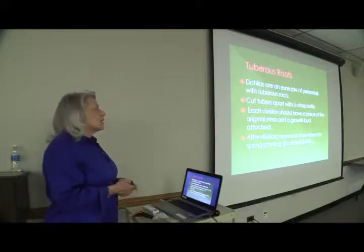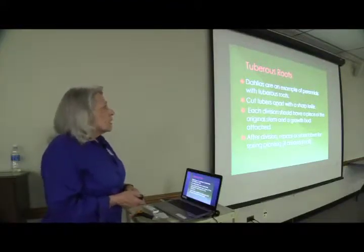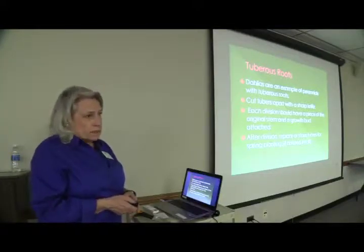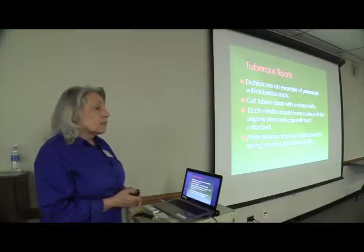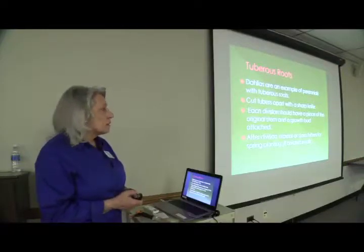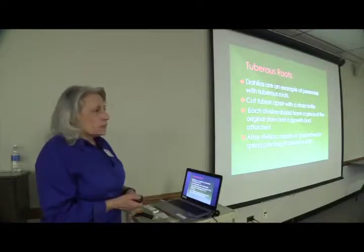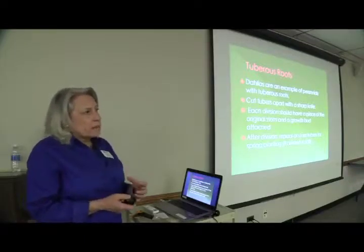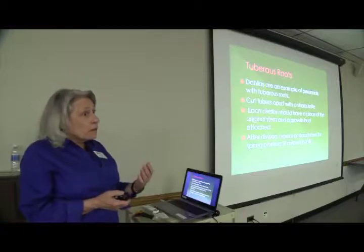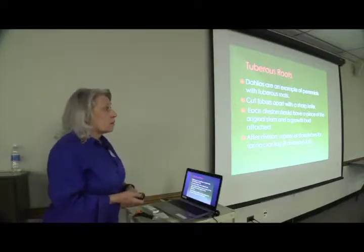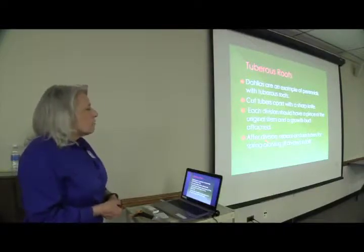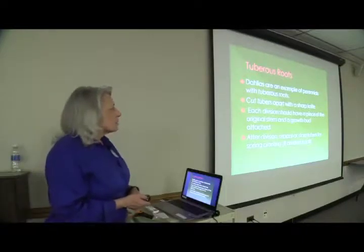Tuberous roots — dahlias are an example of perennials with tuberous roots. Cut the tubers apart with a sharp knife. Dahlias should be lifted in the fall, and you can either replant them then if they're hardy where you are, or dig them up in the spring. Dahlias are not reliably hardy here, so if it's your prize dahlia you might want to lift it in the fall and save it until spring. You want a piece of the original stem and a growth bud attached, then after division replant or store the tubers for spring planting.